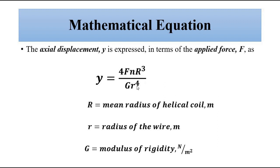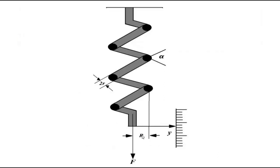In the numerator we have capital R³, and in the denominator we have small r⁴. Capital R is the mean radius of the helical coil from the center point to the extreme point.